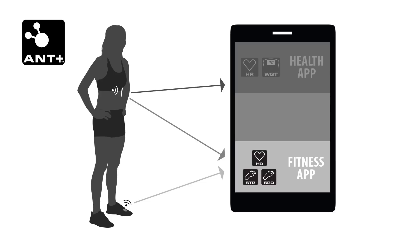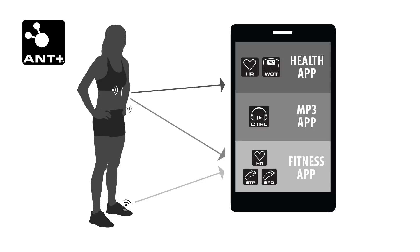Let's say while the runner is tracking her run data on the fitness app, she's also listening to music on another app which uses the Ant Plus controls profile as a controllable audio device. This app can send data like the track title and elapsed time to an Ant Plus controls watch, which is used to send back commands like volume control and next track.